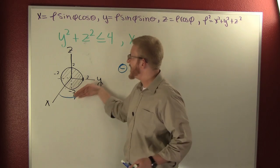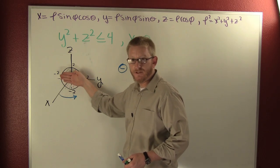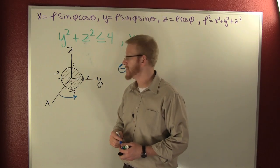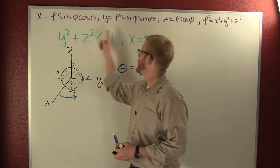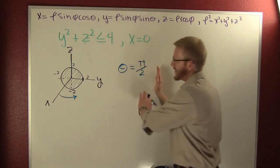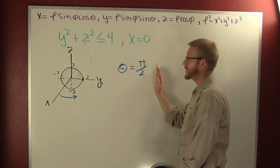It has to be fixed at a pi over 2 rotation from the positive x-axis. Why? Because in the rectangular world, x is 0. How does that translate into spherical? Theta is pi over 2.